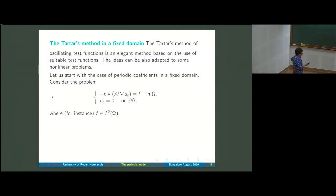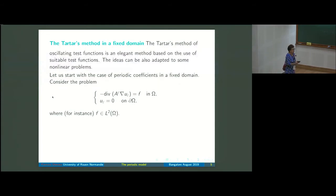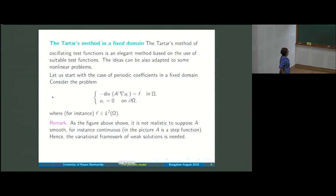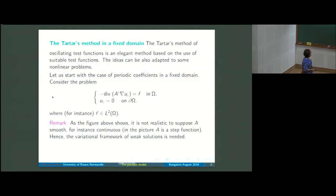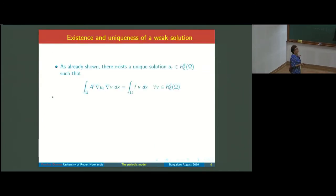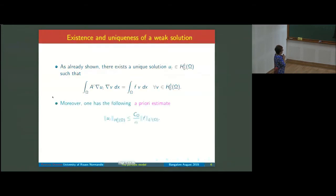Consider the problem: −div(a_ε ∇u_ε) = f with Dirichlet condition, where f is in L2(Ω). Since the material has jumps, we use the variational framework of weak solutions. Existence and uniqueness were proved yesterday, so we have a unique solution u_ε in H^1_0(Ω) satisfying the variational formulation and the a priori estimate.